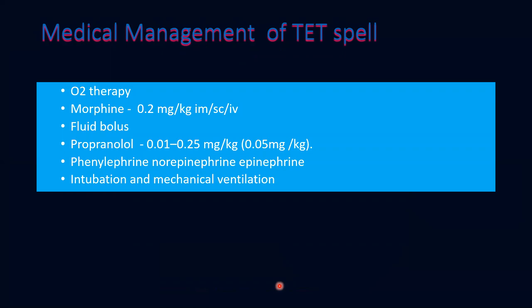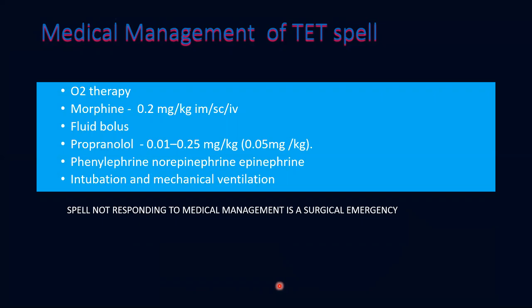To summarize the medical management of a spell: start the child on oxygen therapy, administer morphine primarily to calm the child, give a fluid bolus with adequate hydration, maintain propranolol at therapeutic dose, and use drugs to increase systemic vascular resistance such as phenylephrine, norepinephrine, or epinephrine in appropriate doses. If none of this helps, intubate and ventilate the child. If the spell is not responding to medical management, it becomes a surgical emergency.